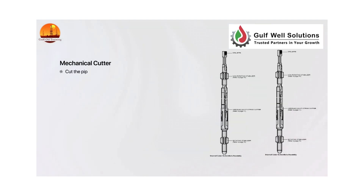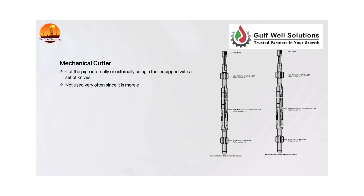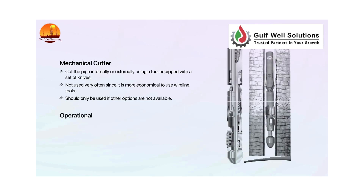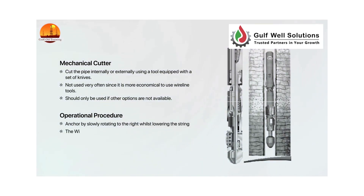Mechanical cutter: cuts the pipe internally or externally using a tool equipped with a set of knives. Not used very often since it is more economical to use wireline tools, and should only be used if other options are not available. Operational procedure: anchor by slowly rotating to the right whilst lowering the string — the wiper blocks resist rotation, moving the slips into the engage position while rotating at 10 to 20 RPM and watching the torque. Free rotation with little or no reverse torque indicates that the cut is complete.